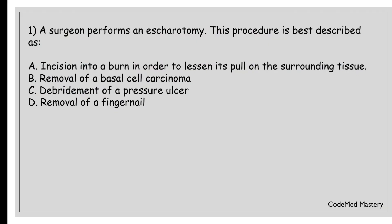First question: a surgeon performs an escarotomy. This procedure is best described as: option A, incision into a burn in order to lessen its pull on the surrounding tissue; option B, removal of a basal cell carcinoma; option C, debridement of a pressure ulcer; option D, removal of a fingernail. The right answer is option A. An escarotomy is a surgical procedure performed to relieve pressure and restore circulation in cases of severe burns.